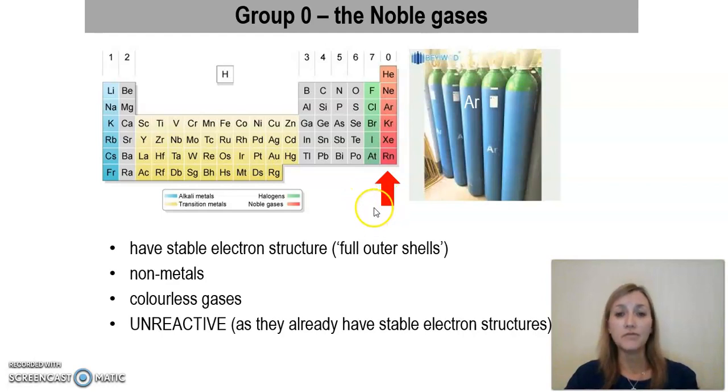They are very unreactive gases, and this is because they have a very stable electron structure, thinking back to our atomic structure topic. They have full outer shells, and therefore do not undergo chemical reactions readily. They're also non-metals, like the halogens, and they're colourless gases.